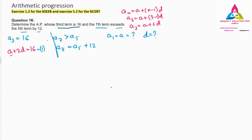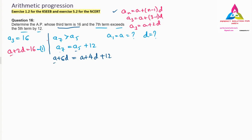For the second condition: a7 = a + 6d and a5 = a + 4d. So the equation a7 = a5 + 12 becomes: a + 6d = a + 4d + 12. Bringing unknowns to one side: a + 6d − a − 4d = 12.